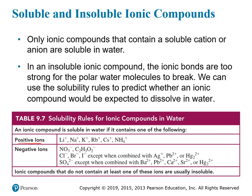The positive soluble ions are lithium, sodium, potassium, rubidium, cesium, and ammonium — with no exceptions, so every compound containing these ions is soluble. For negative ions, nitrate and acetate have no exceptions either — anything formed from them is soluble. Chloride, bromide, and iodide tend to be soluble, but with exceptions: when combined with silver, lead, or mercury, those compounds are insoluble. So silver chloride, silver bromide, silver iodide, lead chloride, lead bromide, lead iodide, mercury chloride, mercury bromide, and mercury iodide are all insoluble.